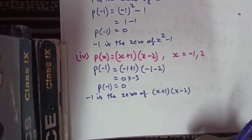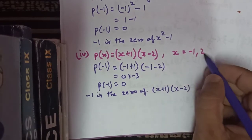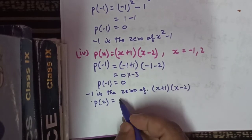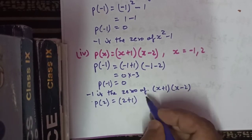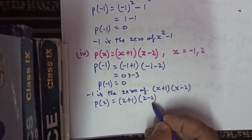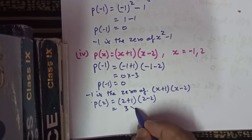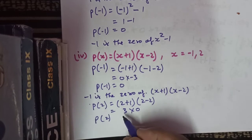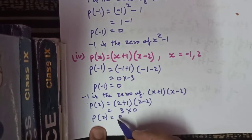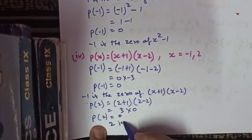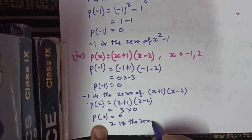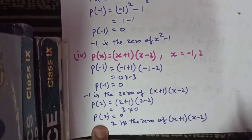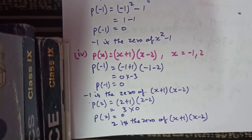Similarly, we find p(2): x plus 1 becomes 2 plus 1 and x minus 2 becomes 2 minus 2. So 3 times 0 equals 0. Since the value of p(2) is 0, yes 2 is also the zero of polynomial x plus 1 times x minus 2. So both minus 1 and plus 2 are the zeros of the given polynomial.